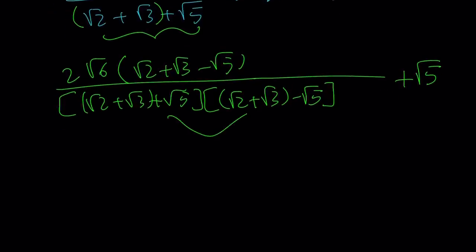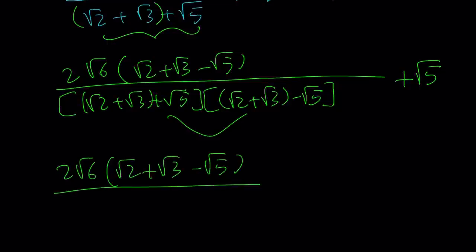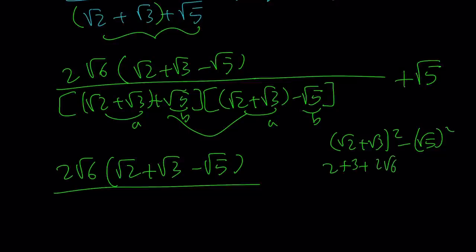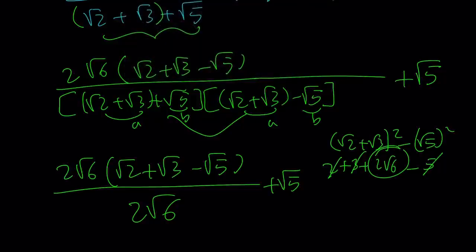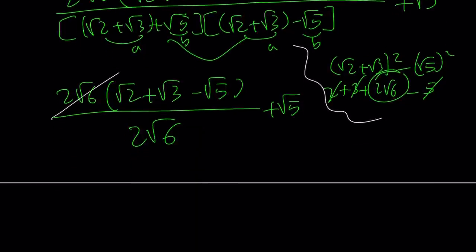When you multiply these two things from difference of two squares, you're going to get something nice. At the bottom, you're multiplying something that looks like a plus b times a minus b. That equals a squared minus b squared. So this equals root 2 plus root 3 squared minus root 5 squared. That is 2 plus 3 plus 2 root 6 minus 5. 2 plus 3 is 5. You end up with 2 root 6 at the bottom, which is awesome. 2 root 6 now is going to cancel out. That's what I got by using difference of two squares.